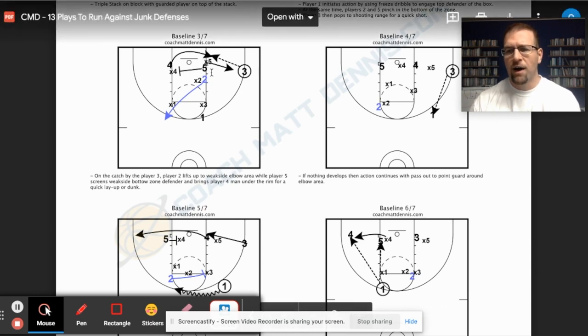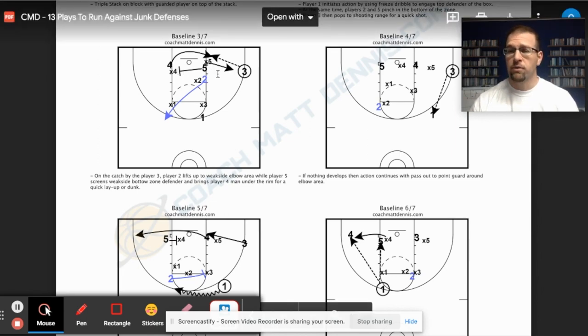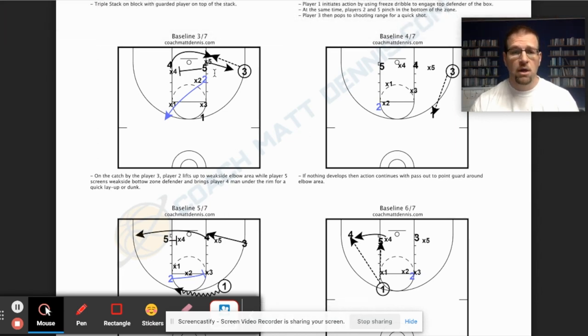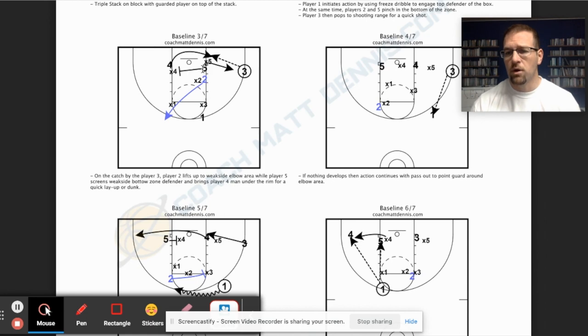Player two is going out to the opposite side to pull that defender out of there. So we've got a chance for a post up. So if five is not your main post player and you want a little more action, have them go screen away and have your four come across. If that's a little bit better option as a post, then you're still going to have your five out here. You're going to have your four getting screened, and then we're going to get a dump down, hopefully, for a basket.